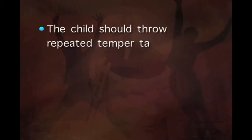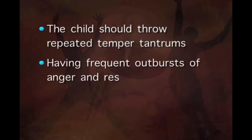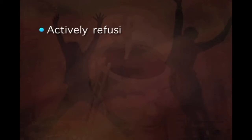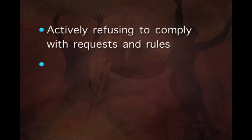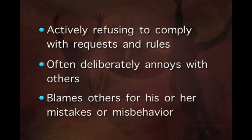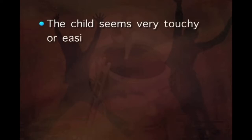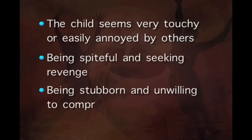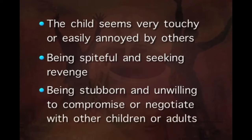The diagnostic characteristics include: repeated temper tantrums, frequent outbursts of anger and resentment, arguing with adults especially those in authority, actively refusing to comply with requests and rules, often deliberately annoying others, blaming others for their own mistakes or misbehavior, being very touchy or easily annoyed, being spiteful and seeking revenge, and being stubborn and unwilling to compromise or negotiate. At least 4 or more of these characteristics must be observed to claim that the child has ODD.